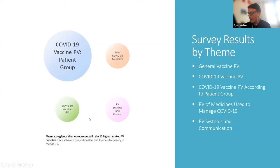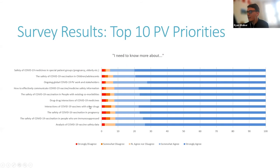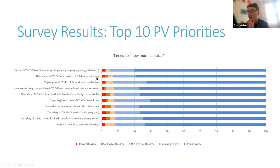Breaking this down further into the actual topics, this diagram shows our top 10 list of pharmacovigilance priorities, listed on the left-hand side going from highest ranked priority to lowest. The blue bars on the left show the level of agreement that respondents indicated that they need to know more about that particular area — the lighter blue being 'somewhat agree' and the darker blue being 'strongly agree'. For our top priority — the safety of COVID-19 medicines in special patient groups — almost 95% of respondents indicated they need to know more about that topic. There's quite a high and close level of agreement in this top 10, ranging between about 92% to 95%.